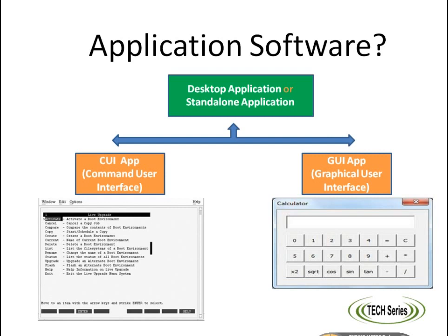Desktop apps are categorized into two sections: CUI and GUI. CUI stands for Command User Interface application. It is totally based on commands for input or output. The keyboard is mostly used in CUI applications.